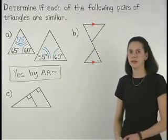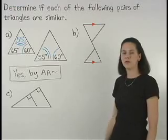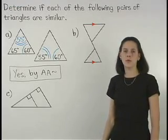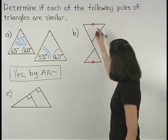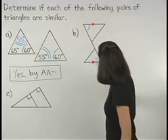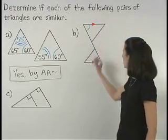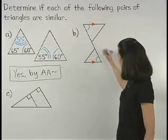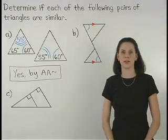In Part B, since we're given that the lines at the top and bottom of the figure are parallel, we can mark the alternate interior angles at the upper left and lower right as congruent. Because if two parallel lines are cut by a transversal, then alternate interior angles are congruent.